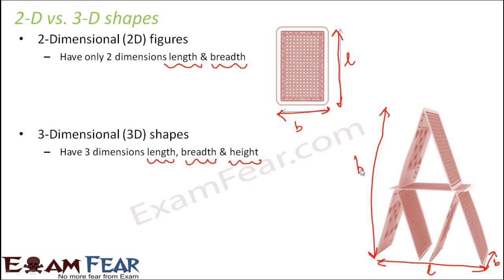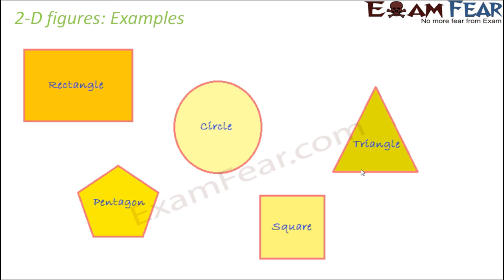That is how a two-dimensional and a three-dimensional object differ from each other. Some examples of two-dimensional figures are rectangle, circle, triangle, square, and pentagon — these are all polygons and all two-dimensional figures. You can describe them completely with just two dimensions. Another useful way to identify whether something is two-dimensional is that any two-dimensional shape can be drawn on a sheet of paper, because paper itself is two-dimensional — it has length and breadth but no height.